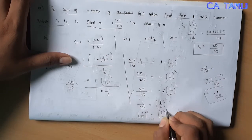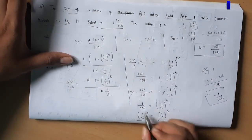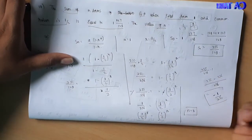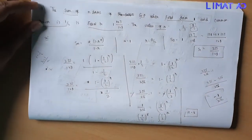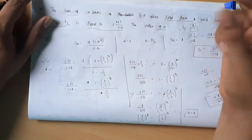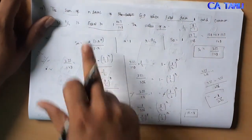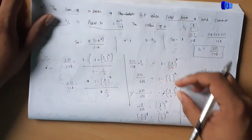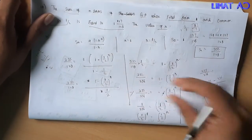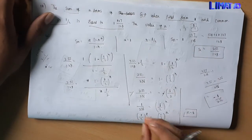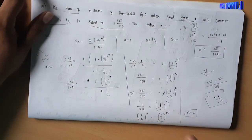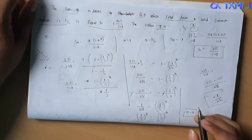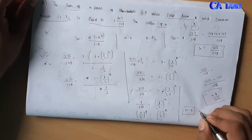So 1/2 to the power n equals 1/256. Since 256 equals 2 to the power 8, we get 1/2 to the power n equals 1/2 to the power 8. Therefore n equals 8. That is the answer to sum number 19.